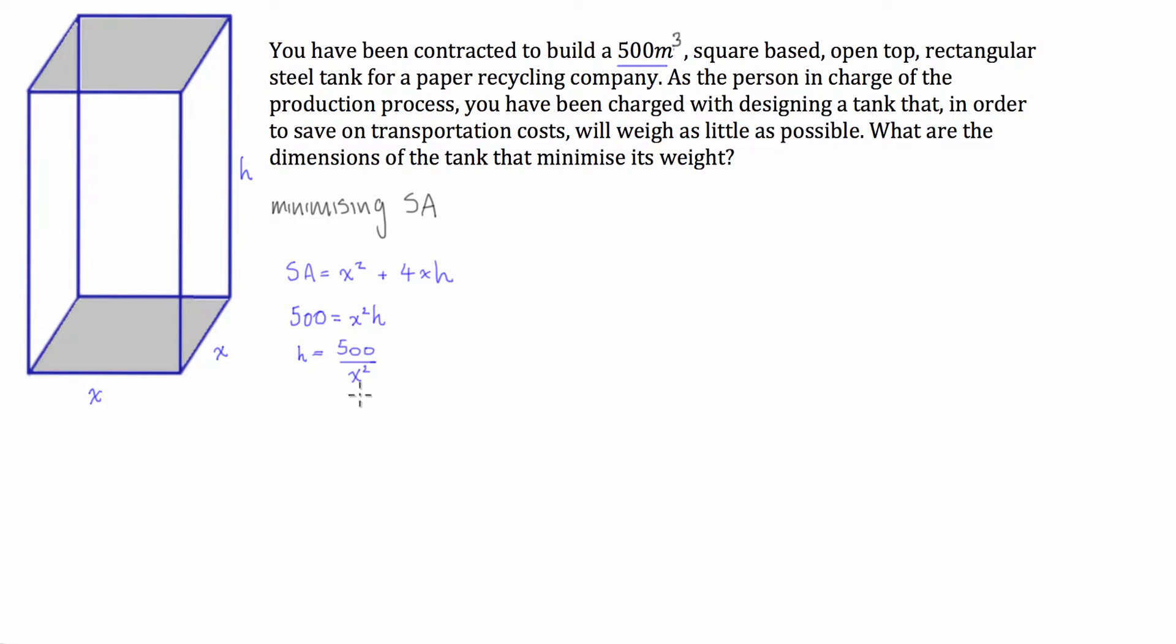So what we can then do is we can substitute this equation in for H in the first equation, and we're left with the surface area being equal to X squared plus 4X times H, which is 500 divided by X squared.